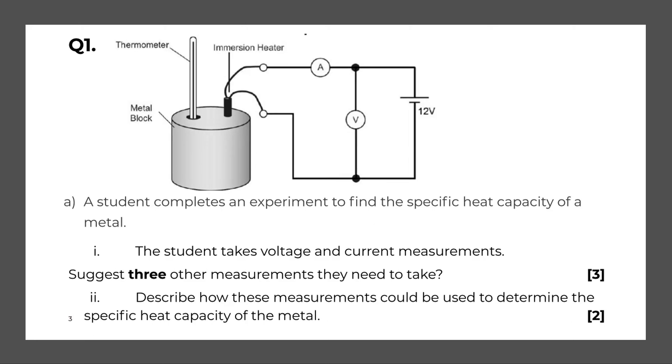Next question. A student completes an experiment to find the specific heat capacity of a metal. The student takes voltage and current measurements. Suggest three other measurements that they could take. So the obvious ones could be that they could take maybe the temperature, the temperature, maybe the mass, and the time. Three reasons would give you three marks.